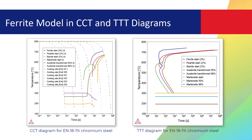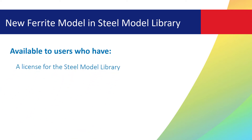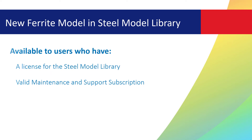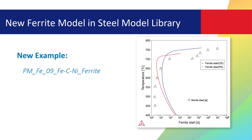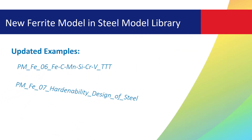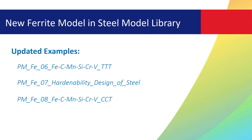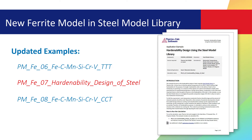The TTT and CCT diagrams calculate the kinetics of concurrent transformation of austenite into ferrite, pearlite, bainite, and martensite. This new ferrite model is available to users who have a license for the Steel model library and a valid maintenance and support subscription. A new example is available to help users learn about this new model, PMFE09, Iron Carbon Nickel Ferrite. Three other examples have been updated to incorporate ferrite into TTT and CCT diagrams, and one of these examples has an in-depth write-up on the hardenability design of steel, which you can find on our website.